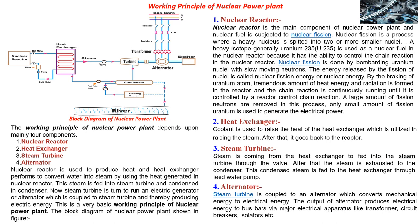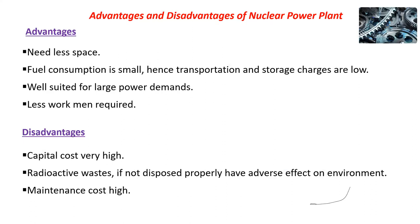If asked in the exam: what is a nuclear power plant — draw a neat sketch and explain the working principle in brief. You can also be asked about the components of the nuclear power plant and the function of each. These four main components should be mentioned. The merits of the nuclear power plant are: it needs less space, fuel consumption is very small compared to thermal power plants, transportation and storage charges are low, and it is well suited for large power demands with fewer workers required.